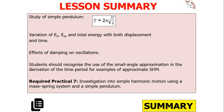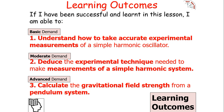In today's lesson we studied the simple pendulum with a time period of T equals 2 pi times the square root of L over g. We examined the variation of kinetic energy, potential energy and total energy with displacement and time, understood dampening of oscillations, and recognised the use of the small angle approximation in deriving the time period — an example of approximate simple harmonic motion. We also learned how to investigate simple harmonic motion using a simple pendulum, how to take accurate experimental measurements, deduce the experimental technique needed, and calculate the gravitational field strength from a pendulum system.